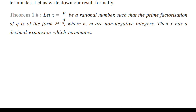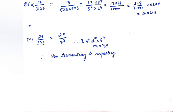Let us see with question number 1 of the exercise. Take the part 13/3125. We know the factors of 3125 are 5⁴. To convert to decimal form, we multiply by the same power of 2 in numerator and denominator: multiply by 2⁴/2⁴. So 13 × 16 = 208, and the denominator becomes 10,000. Therefore the decimal form is 0.0208.